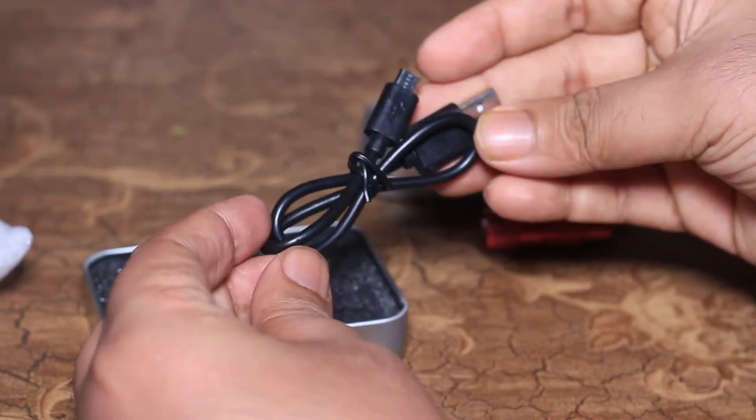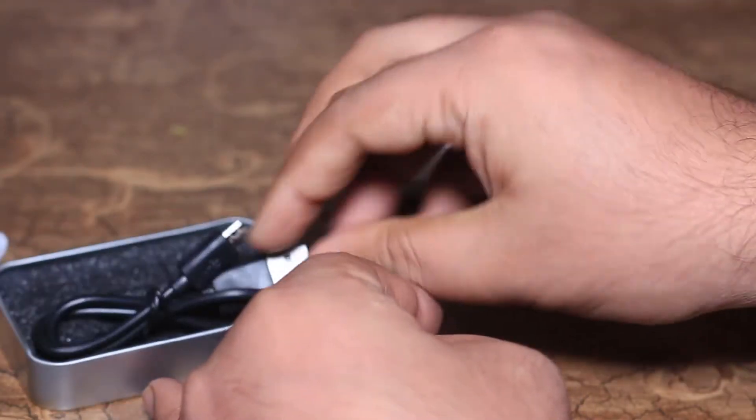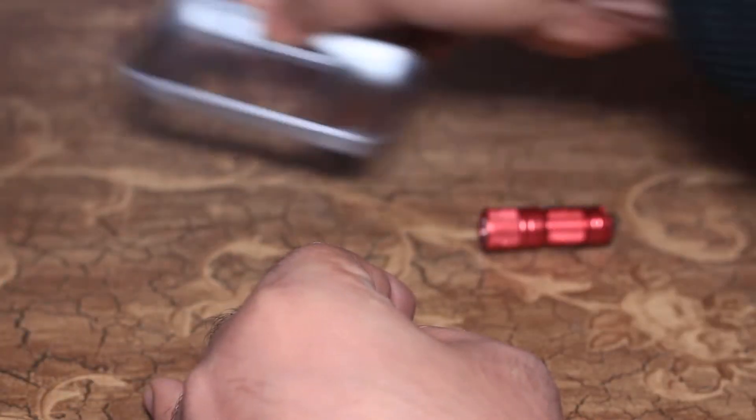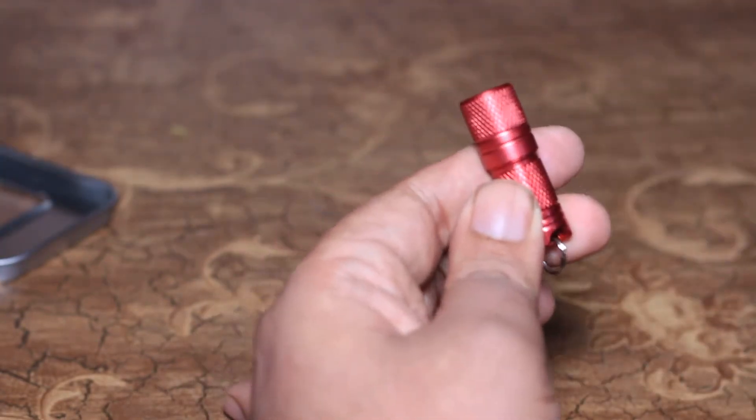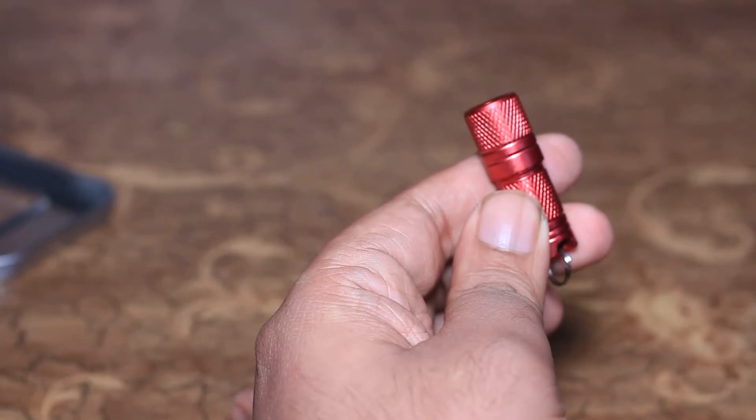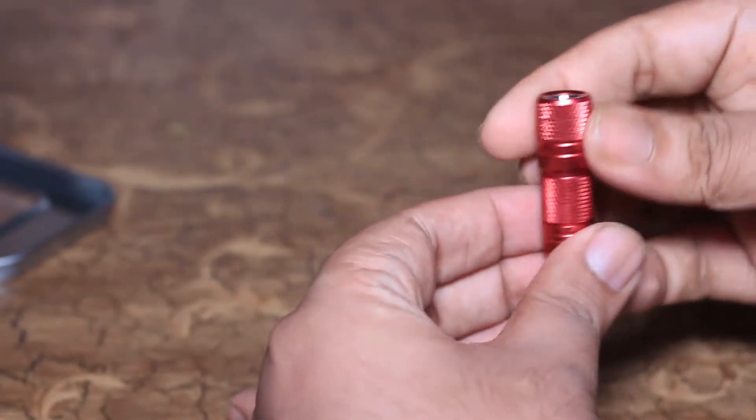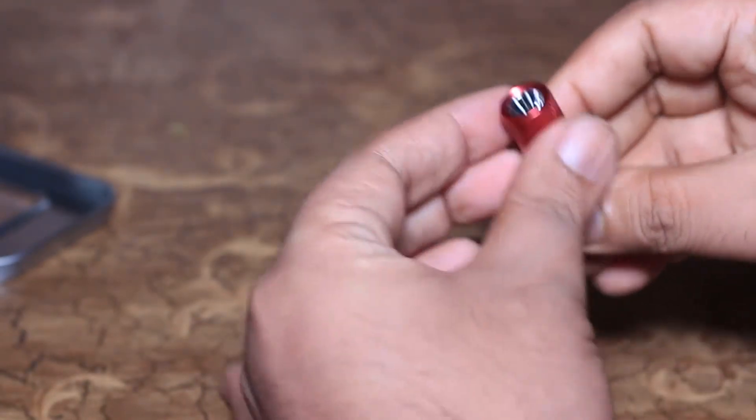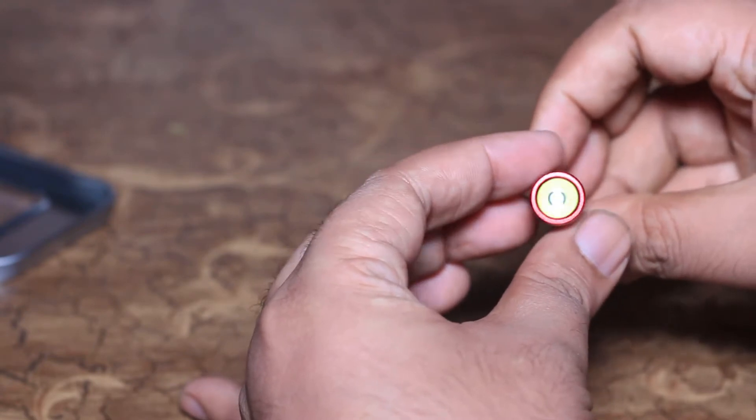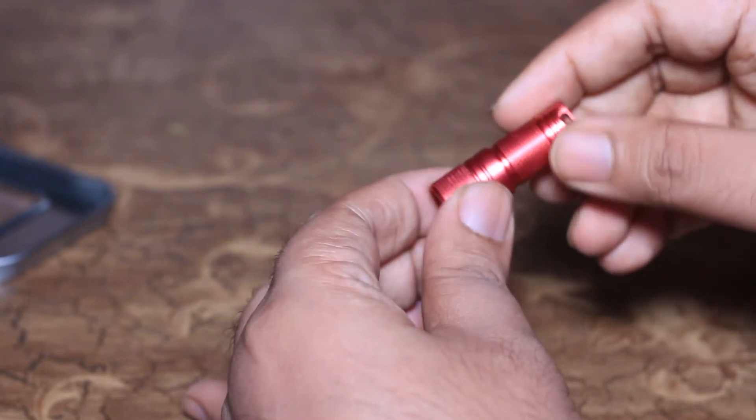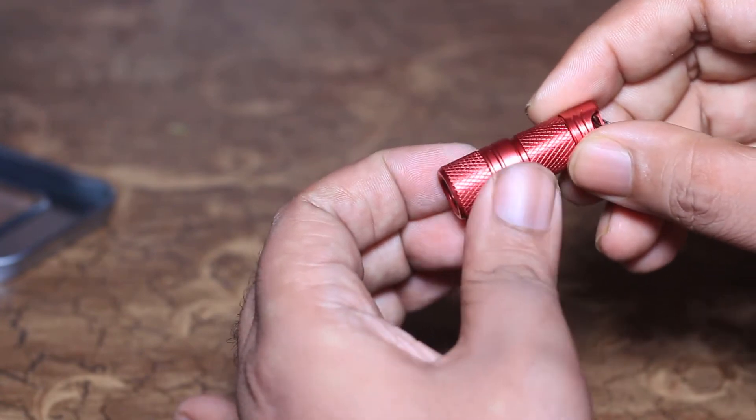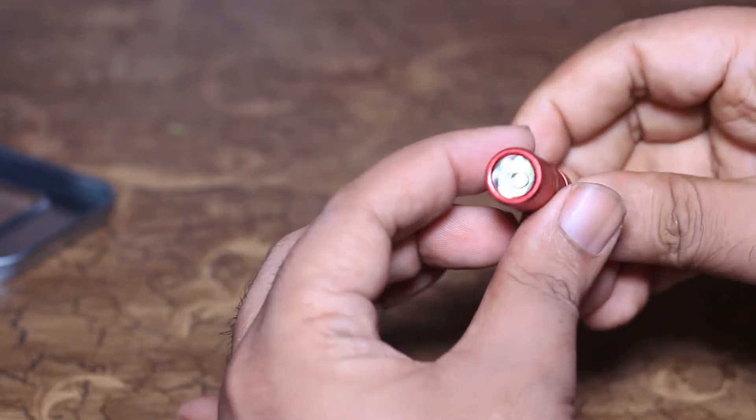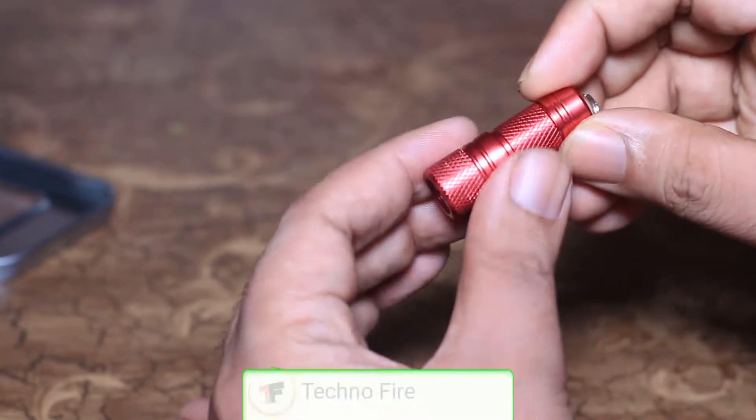This is the charger cable to charge the flashlight. It is lightweight with a built-in rechargeable battery. You can remove it. It is waterproof, so if you take it in water there will be no problem.